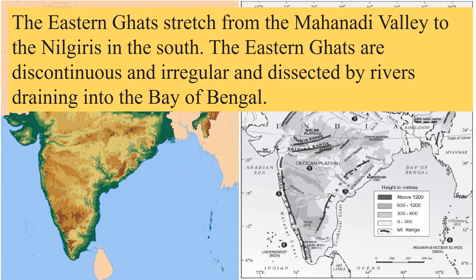The Eastern Ghats stretch from the Mahanadi valley to the Nilgiris in the south. The Eastern Ghats are discontinuous and irregular, dissected by rivers draining into the Bay of Bengal, such as the Godavari and Krishna.